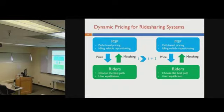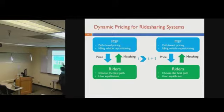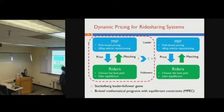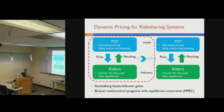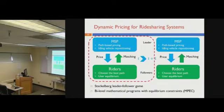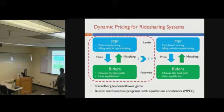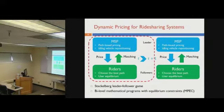We model this problem as a multi-period bi-level problem to capture the interdependent decision-making process between the service provider and riders. In each time period, the pricing problem is modeled as a Stackelberg leader-follower game: the service provider acts as a leader making pricing decisions and vehicle dispatch decisions. In the lower level, riders act as followers — given the prices, they choose their best path, and after competition for limited vehicle resources, they reach a user equilibrium. This Stackelberg program can be modeled as a bi-level mathematical program with equilibrium constraints.